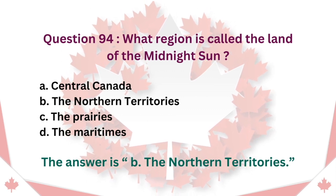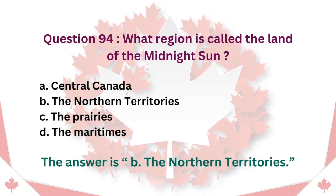Question 94: What region is called the Land of the Midnight Sun? A. Central Canada. B. The Northern Territories. C. The Prairies. D. The Maritimes. The answer is B. The Northern Territories.